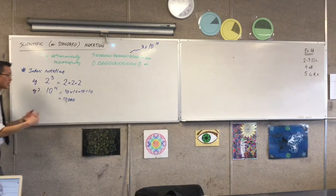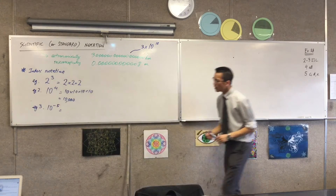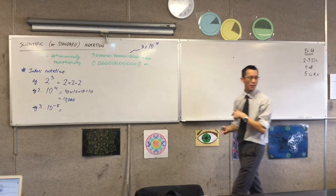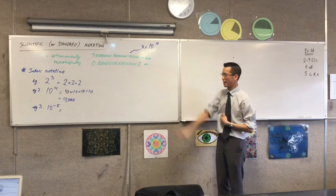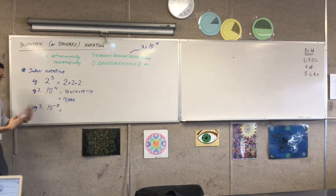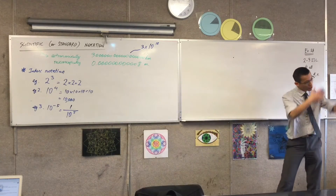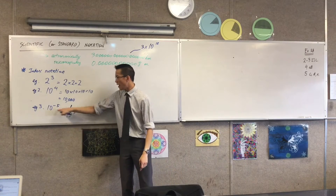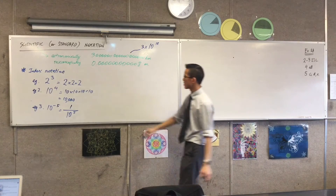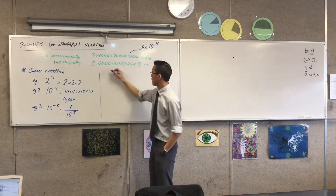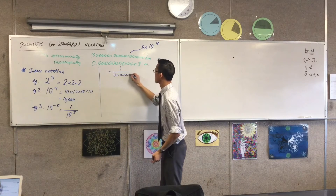It gets a little bit trickier when we want to introduce negative indices. Let's do a third example. Negative indices — this is about dividing numbers rather than multiplying them, so we're trying to get really small numbers rather than really big ones. A rhyme you might have learnt is: to turn this into a positive index, cross the line, change the sign. So you cross the line, you come underneath — we're on the denominator now. Cross the line, change the sign: so it's not negative 5 anymore, it's 5. This is 1 over 10 times 10 times 10 times 10 times 10.